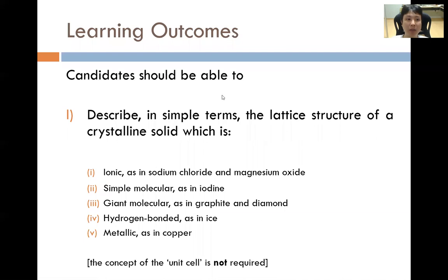Learning outcome L: candidates should be able to describe in simple terms the lattice structure of a crystalline solid which is ionic, as in sodium chloride and magnesium oxide; simple molecular, as in iodine; giant molecular, as in graphite and diamond; hydrogen bonded, as in ice; as well as metallic, as in copper.